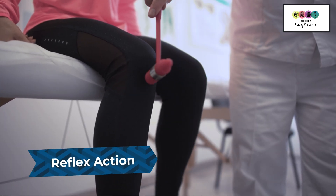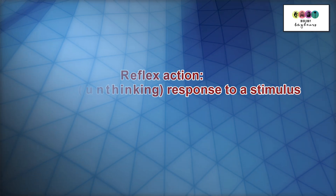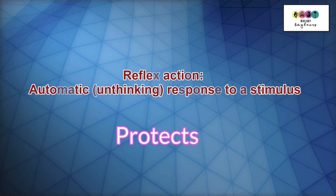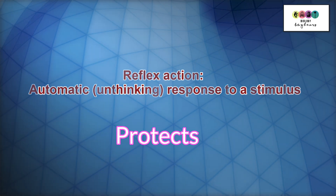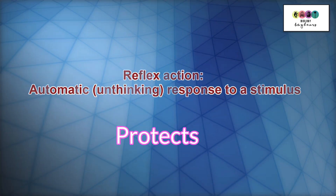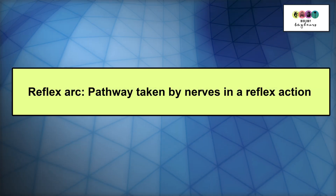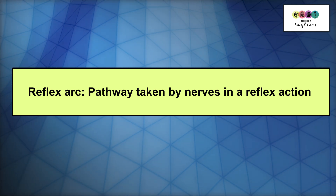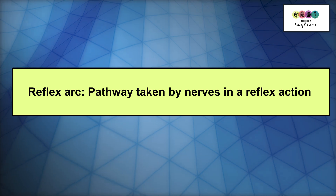Next let's go on to a reflex action. A common example is hitting just below the knee and the leg kicks out. A reflex action is an automatic, unthinking response to a stimulus, and it's there for protection — imagine if you put your hand on something hot and quickly pull it away; that's a reflex action, there to protect you and stop you from getting burned. A reflex arc shows the pathway taken by nerves in a reflex action — how the impulse is carried into the spinal cord and then out towards a muscle or other effector.